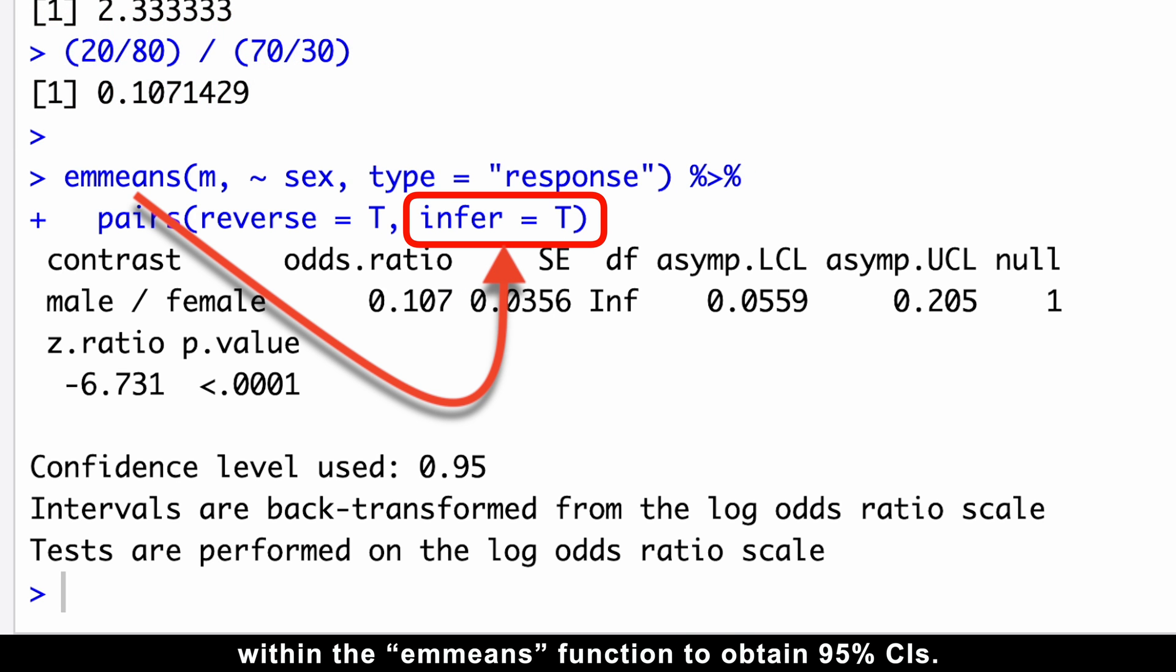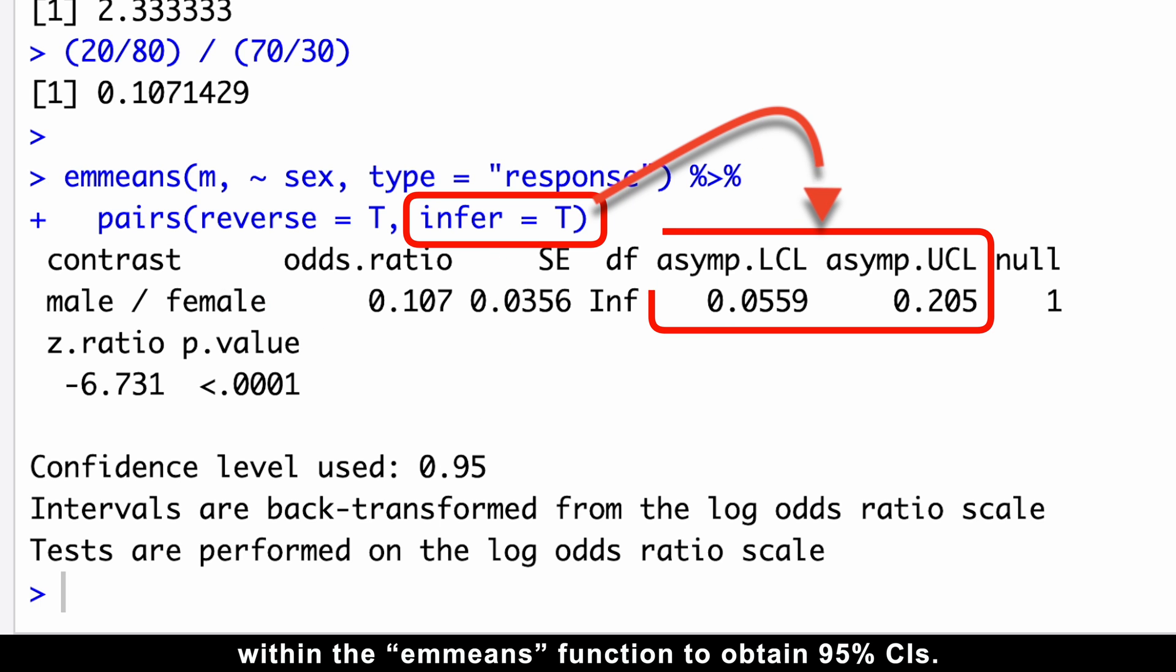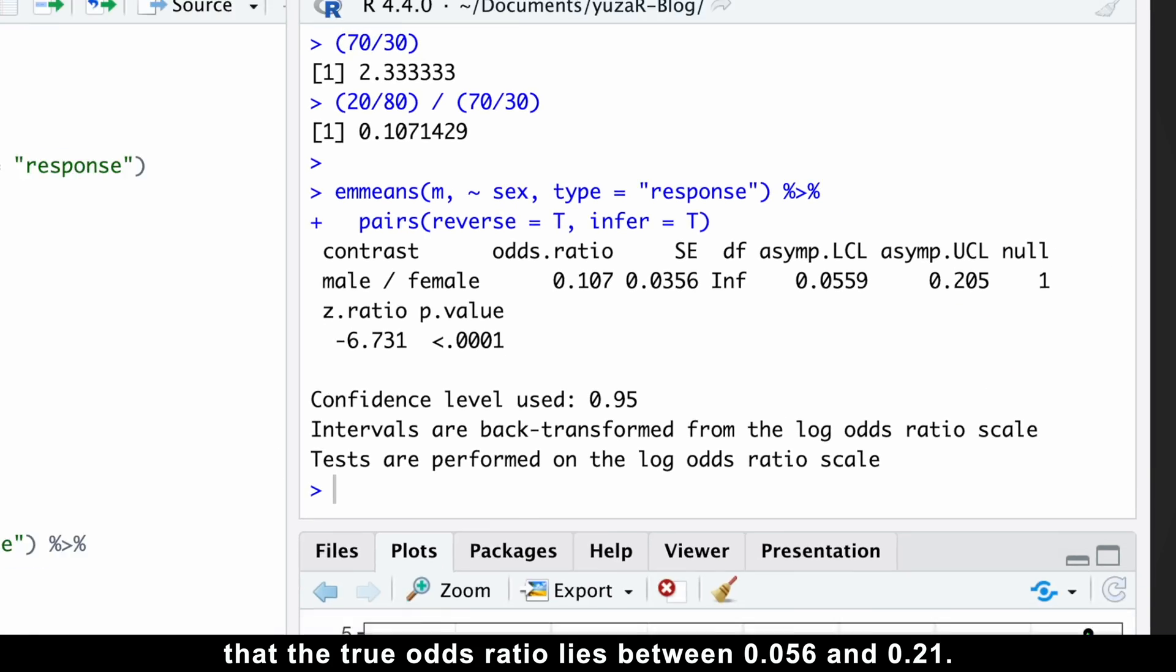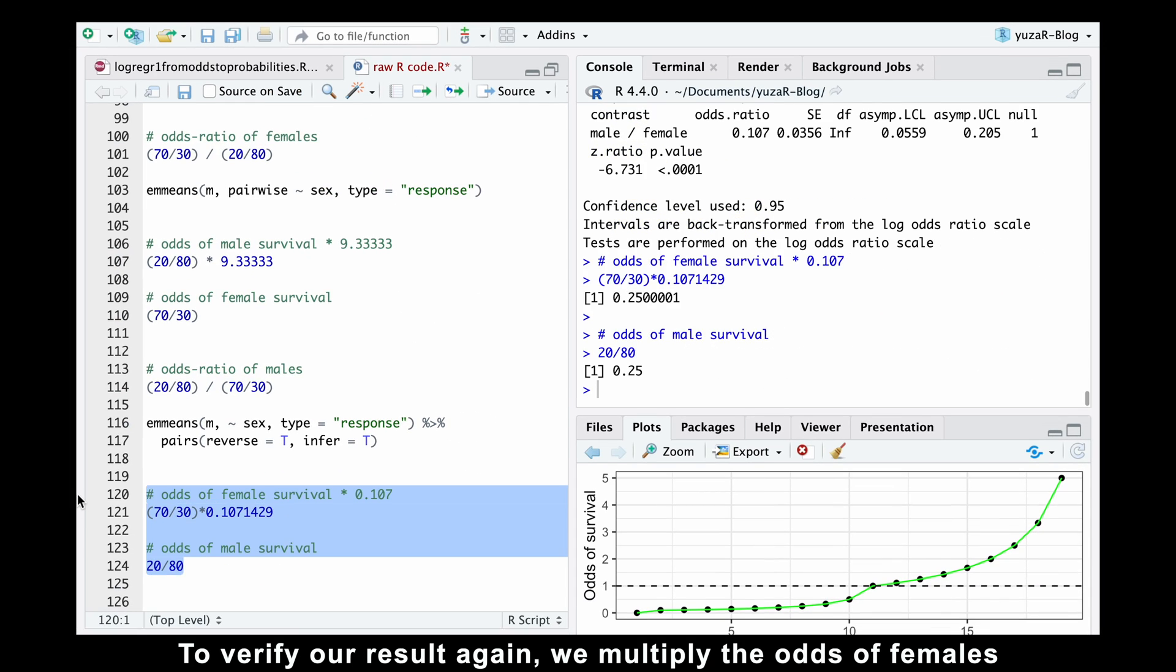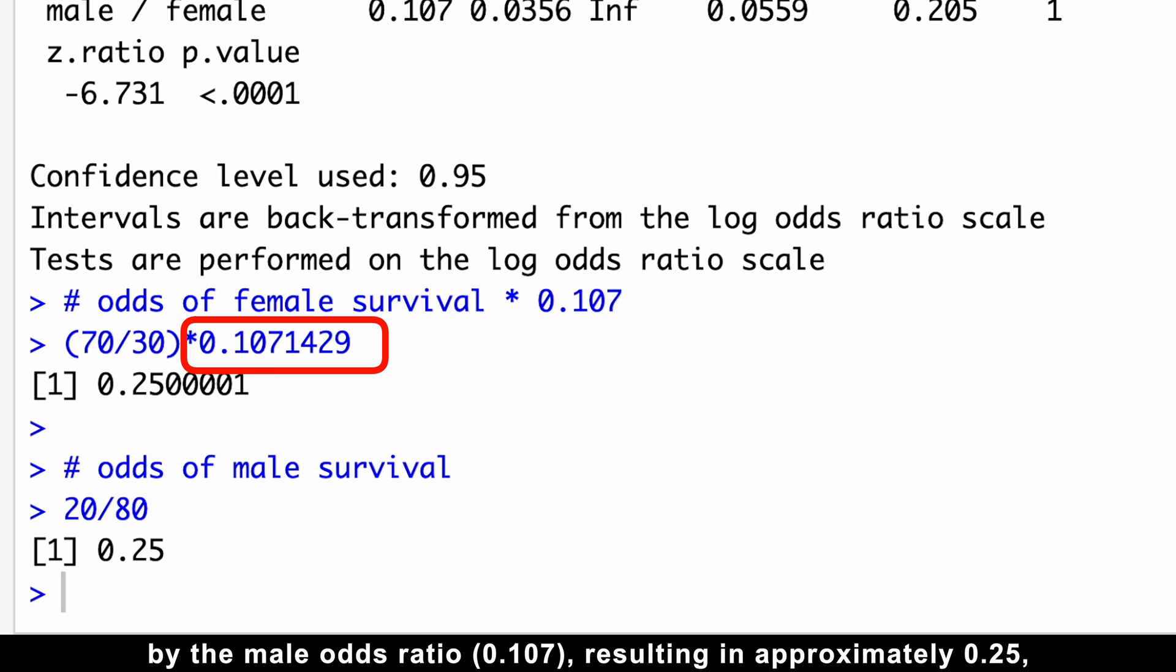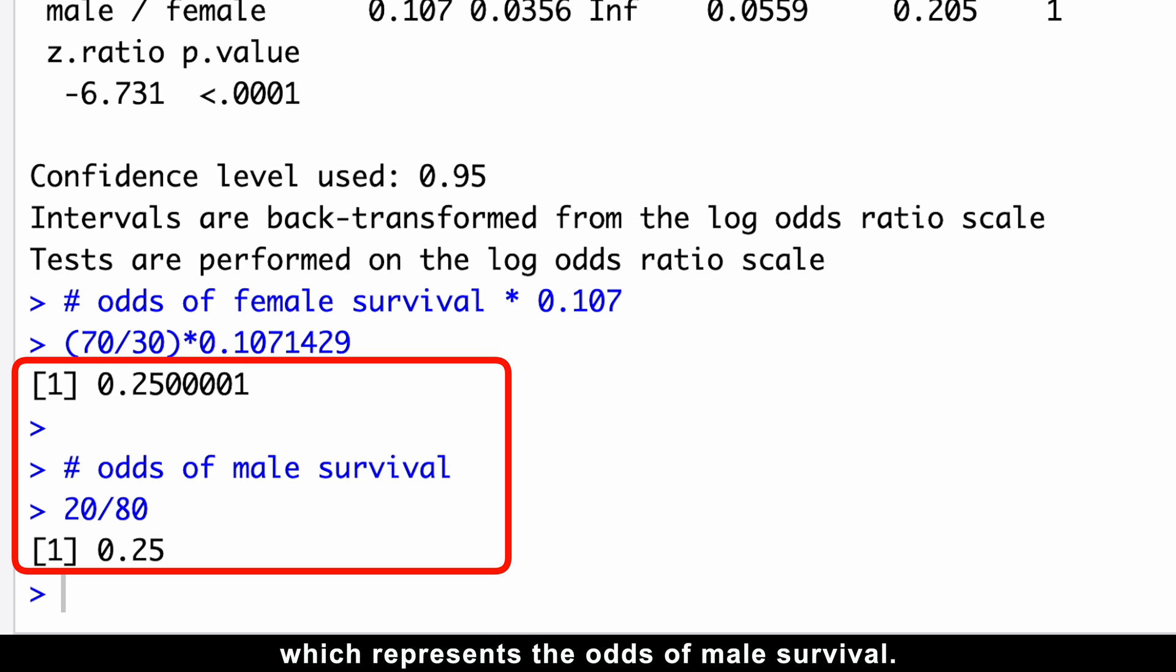Additionally, you can utilize the infer equals true argument within the emmeans function to obtain 95% confidence intervals. And this approach allows you to be 95% confident that the true odds ratio lies between 0.56 and 0.21. To verify our result again, we multiply the odds of females by the male odds ratio of 0.1, resulting in approximately 0.25, which represents the odds of male survival.